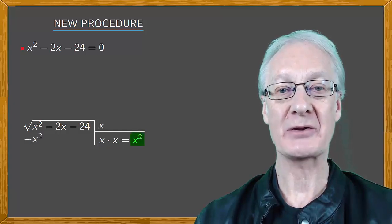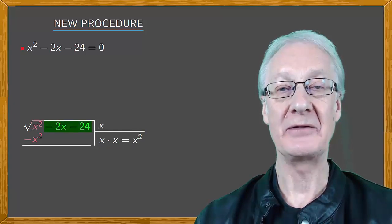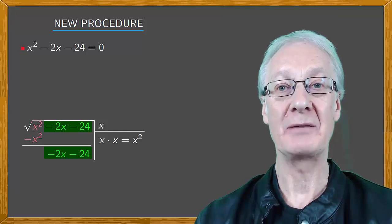Then we take away x squared on the left side, leaving us with minus 2x minus 24.